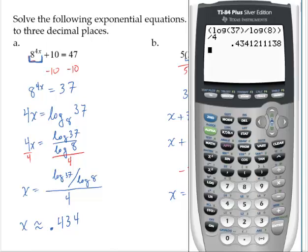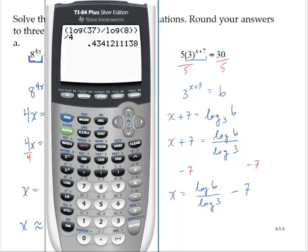Again, on the calculator, let's be careful how we input that. All right, so log 6, close off the logarithm, divide by log 3, close off the logarithm, and now subtract 7.